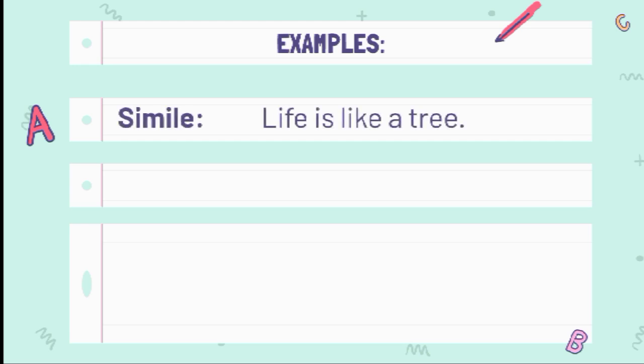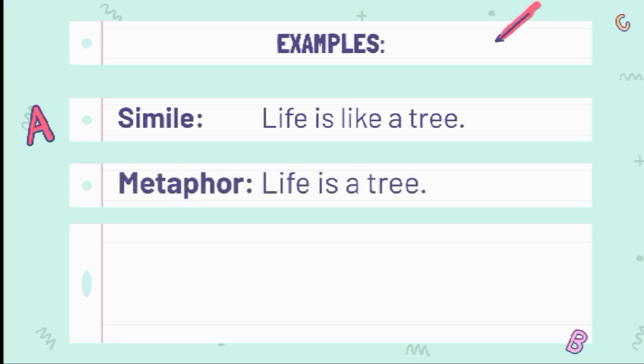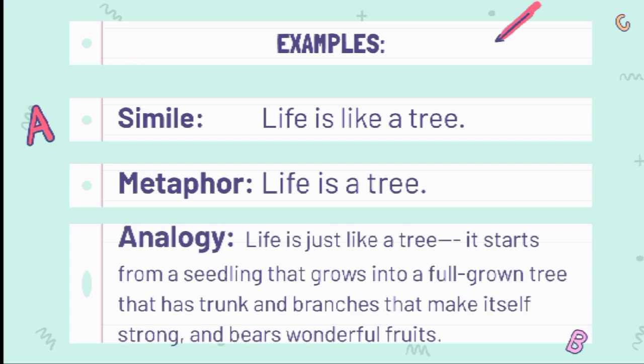For simile, example: 'Life is like a tree.' Simile is a comparison between two unrelated objects with the use of 'like' or 'as.' For metaphor, example: 'Life is a tree.' This compares two unrelated things without the use of 'like' or 'as.' For analogy, example: 'Life is just like a tree — it starts from a seedling that grows into a full-grown tree that has a trunk and branches that make itself strong and bears wonderful fruits.' Analogy is more complex in nature than a figure of speech.